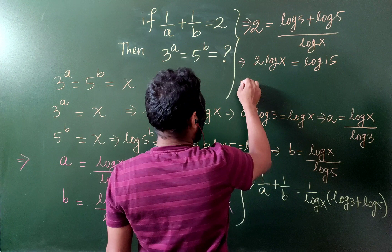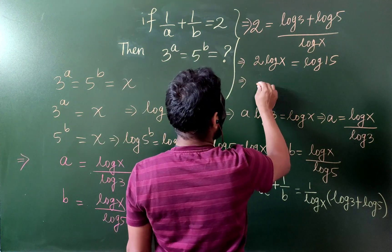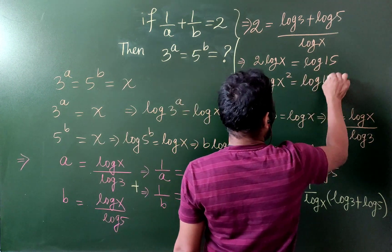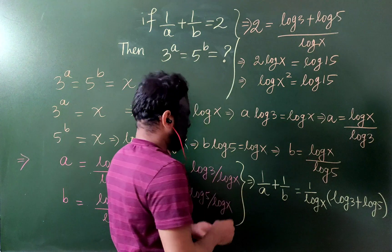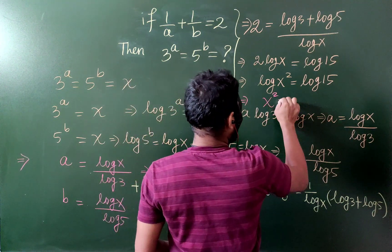2 log x equals to log 15. And we can write this one as log x square equals to log 15. And cancelling log both sides,